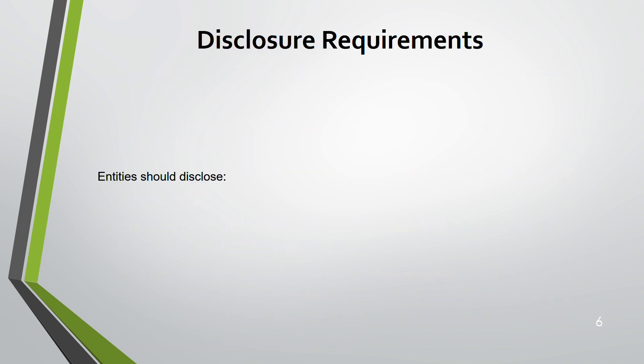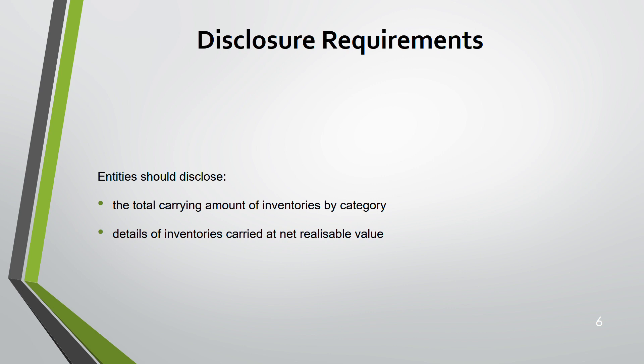For disclosure requirements, you must disclose the total carrying amount of inventory by category. On the statement of financial position you show raw materials, work in progress, and finished goods separately. You must also provide details of inventory carried at net realizable value. That covers IAS 2 — let's do a small question before ending this lecture.